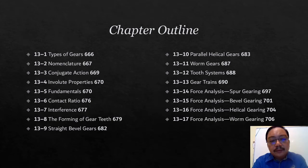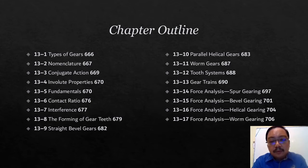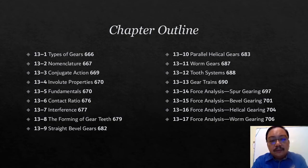I am going to tell about the layout from the gears. This is the chapter outline for the gears. You can see, if you have the book, these are the topics and all the pages that refer to each topic. It will start with types of gears, nomenclature, conjugation, involute properties, fundamentals, contact ratio, interference, forming of gear teeth, and straight bevel gears.